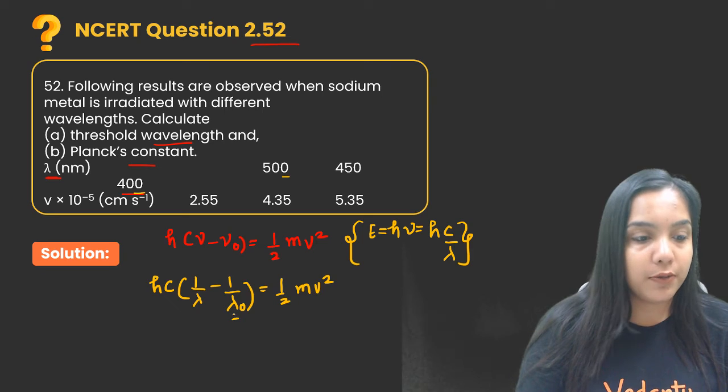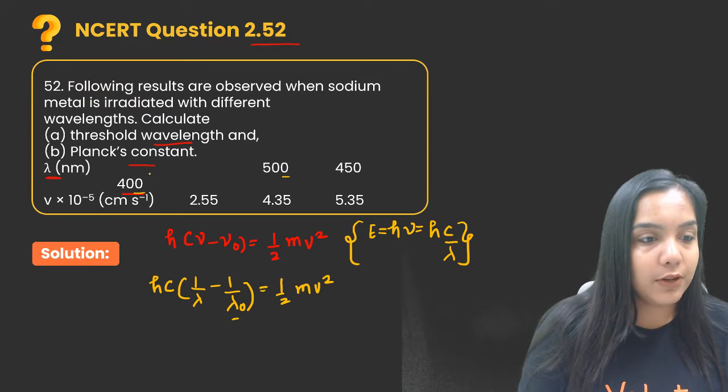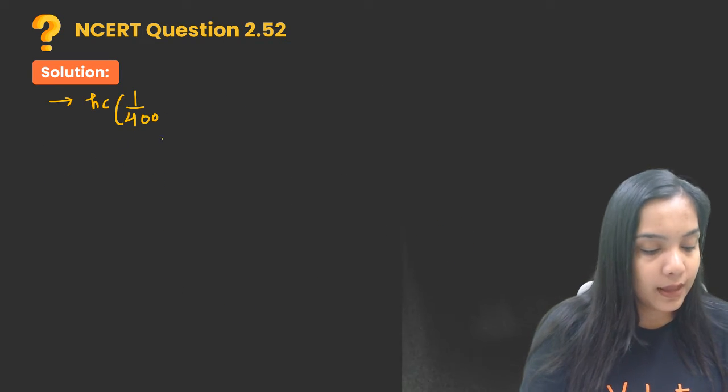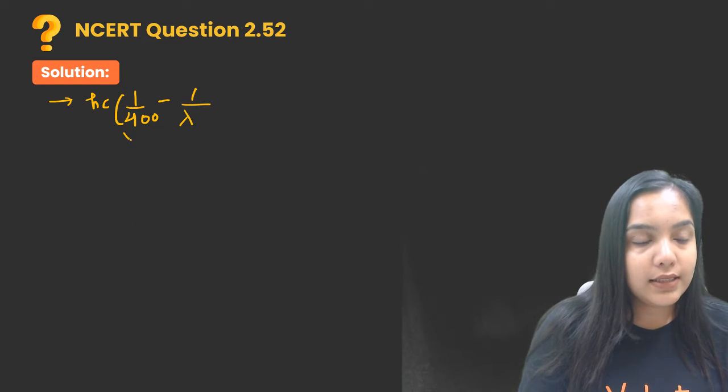Like this: suppose here it is given 400, so I will put 400 minus one upon lambda naught. It is given in nanometer so I will just multiply by 10 raised to power minus 9.